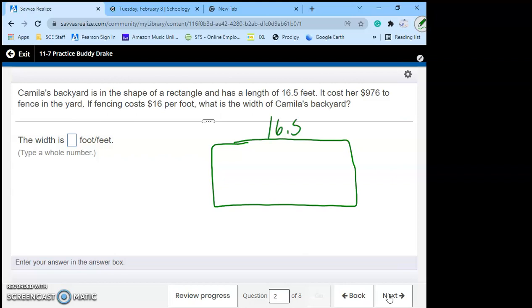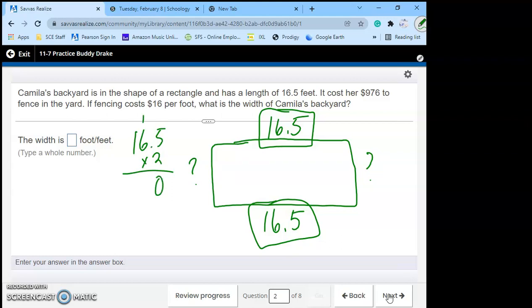If fencing cost sixteen dollars per foot what was the width? Okay so we have a rectangle and it says that the length is 16.5, which means this length is 16.5 but we do not know the width. We do know the total to fence is 976. So the first thing we need to do to find the perimeter, we need to add these two or multiply them. 5 times 2 is 10, 2 times 6 is 12 plus 1 is 13, 2 times 1 is 2 plus 1 is 3. So far my perimeter is 33 feet. I'm still missing two sides.